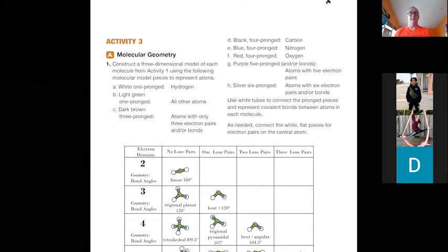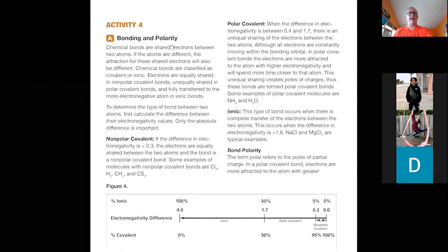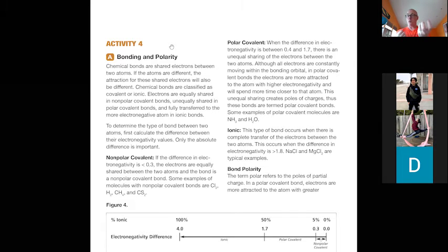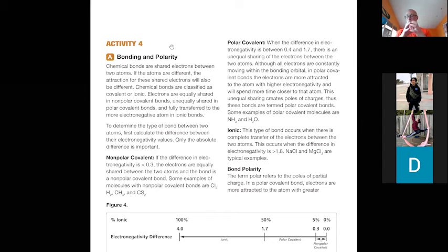And the fourth activity is looking at polarity. This really puts what you've been learning about electronegativity and shapes together, because we need to understand why some molecules are polar and some aren't. The polarity of molecules basically determines their behavior and their interactions with each other. The reason why water is polar, and why long chain hydrocarbons are not polar — why they don't mix — is related not just to shape but to the polarity of the bonds in each one.